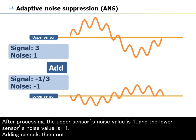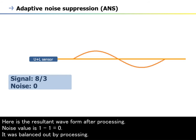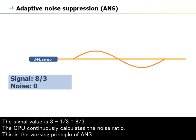After processing, the upper sensor's noise value is 1 and the lower sensor's noise value is minus 1. Adding cancels them out. Here is a waveform with the upper and lower sensor's output. Here is the resultant waveform after processing. Noise value is 1 minus 1 equals 0 — it was balanced out by processing. The signal value is 3 minus 1/3, equals 8/3. The CPU continuously calculates the noise ratio. This is the working principle of ANS.